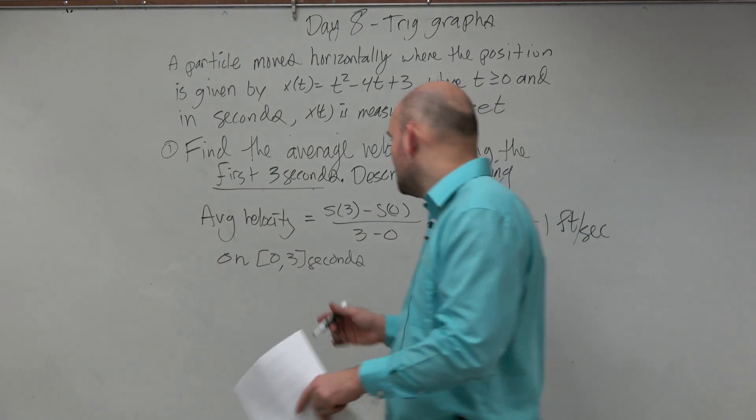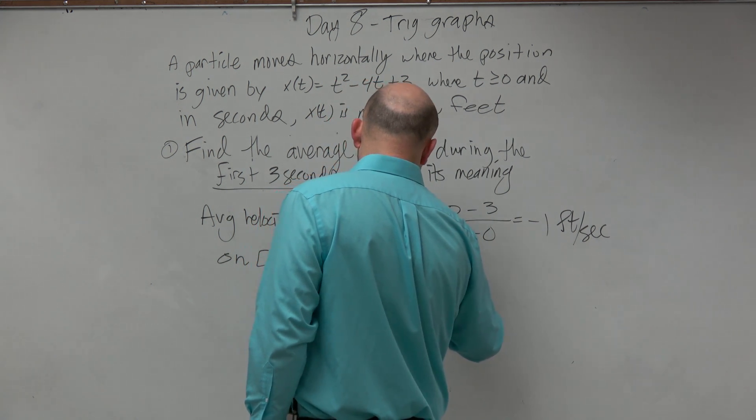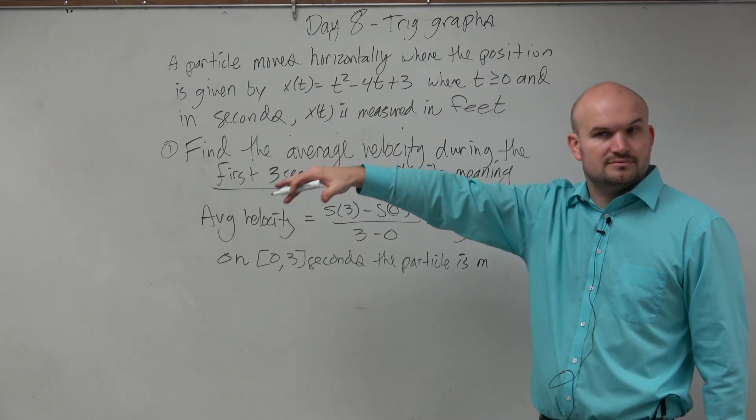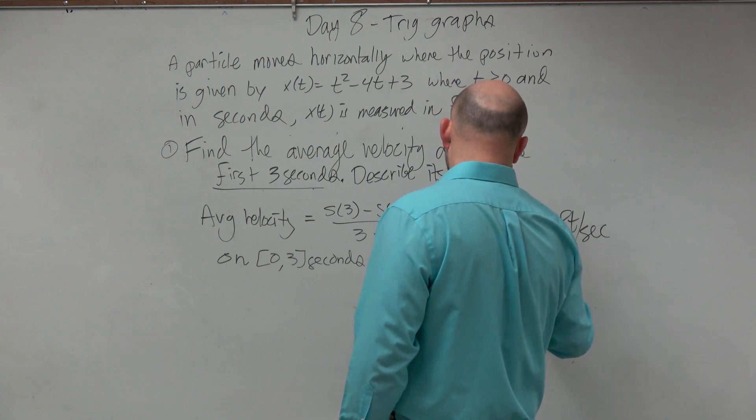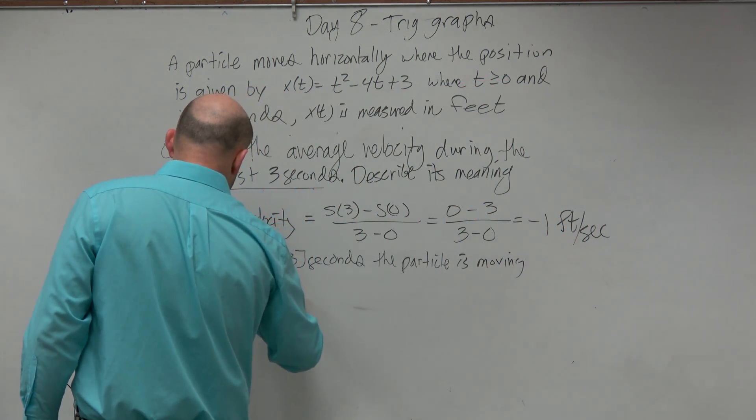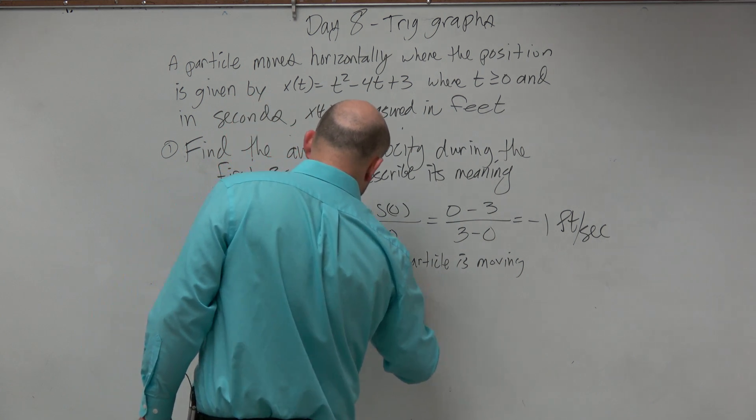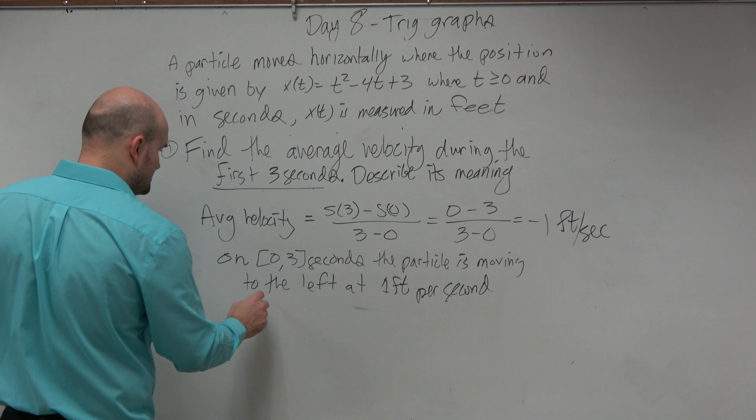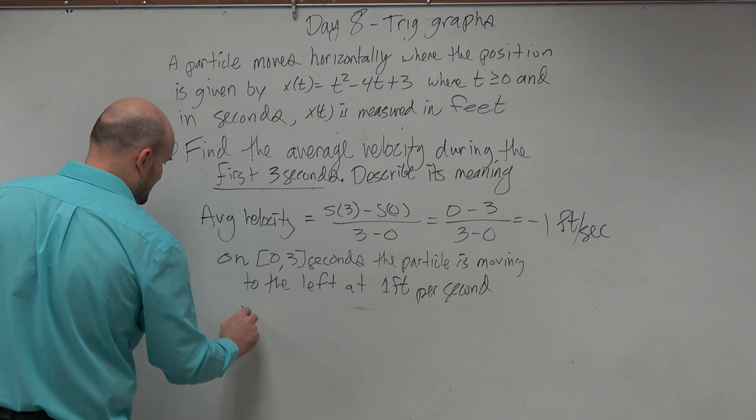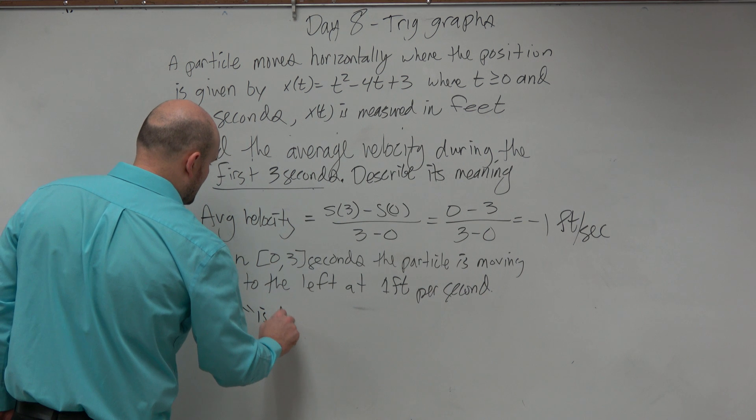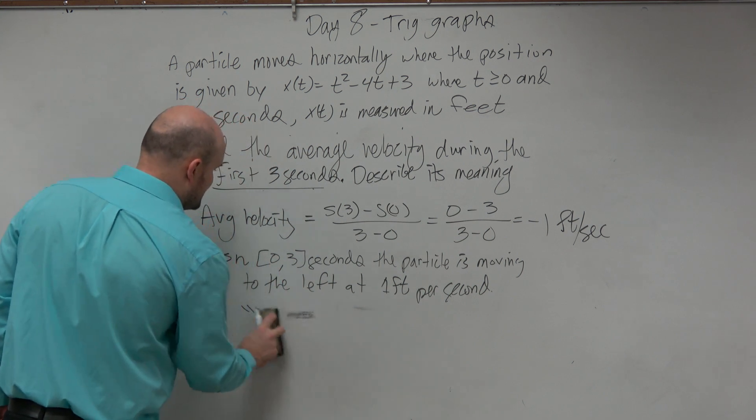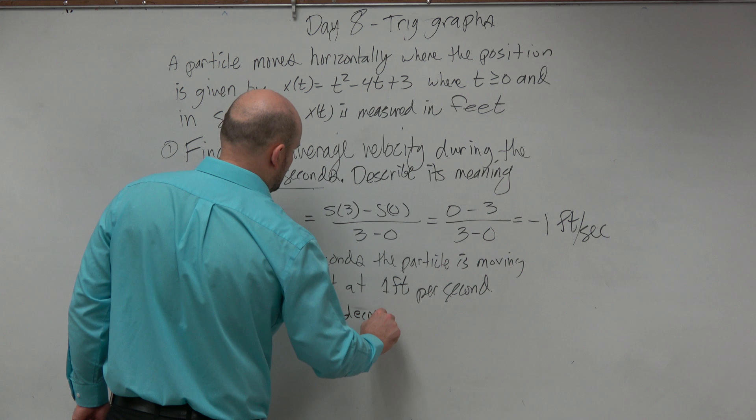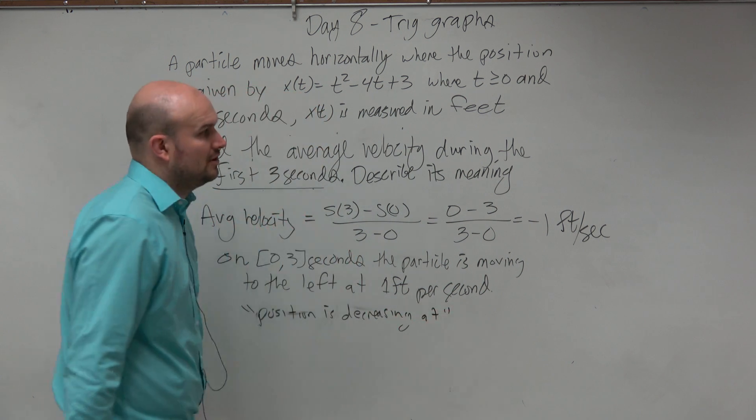the particle is—and again, the reason why we're saying moving to the left is because it says it's moving horizontally, OK? Is moving to the left at 1 foot per second. Or you could say—you could also say instead of that, you could also say is decreasing, or position is decreasing at—and then throw that in there as well.